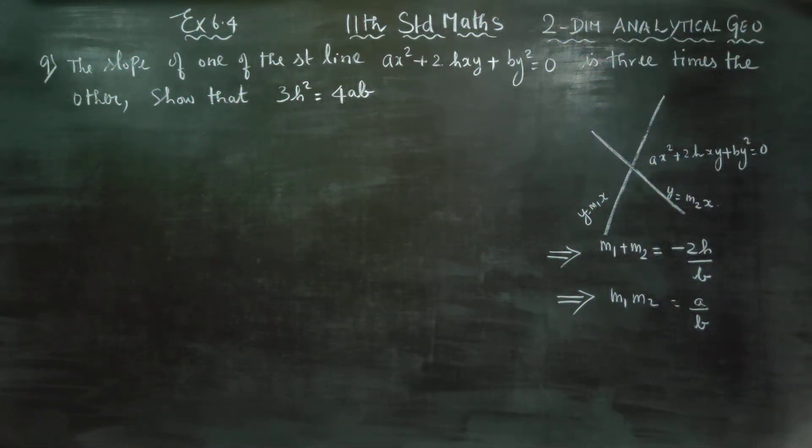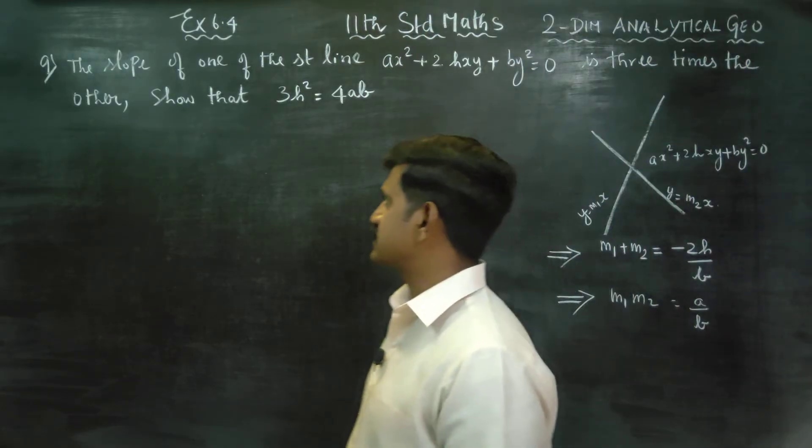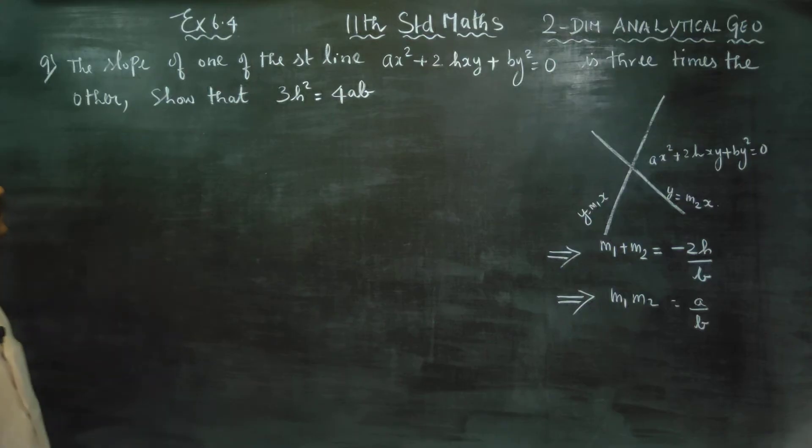Dear 11 standard students, in exercise number 6.4, sum number 9, the slope of one of the straight lines is thrice the slope of the other. Show that 3h² is equal to 4ab.